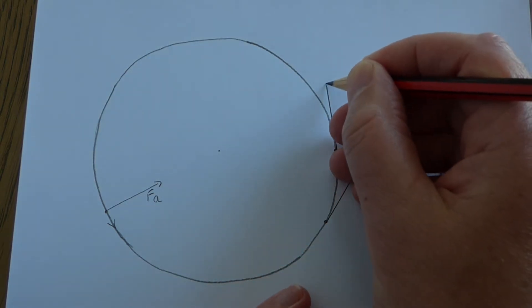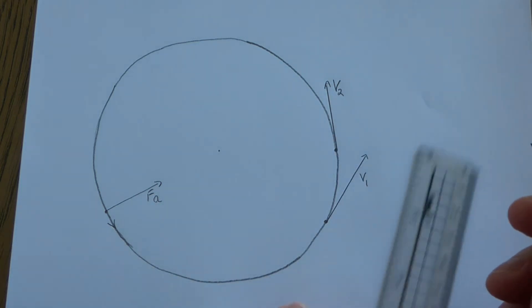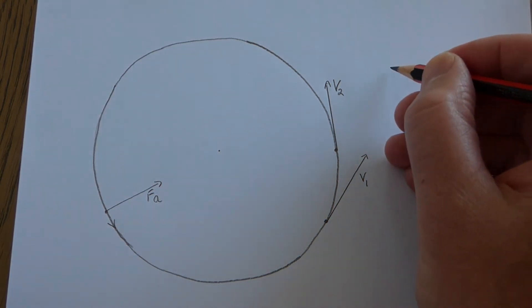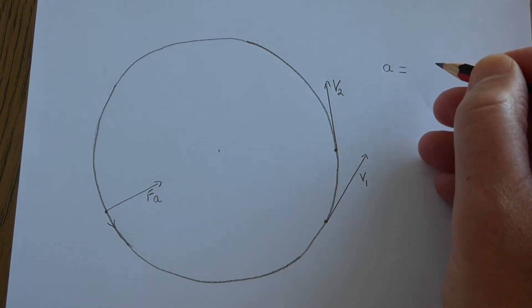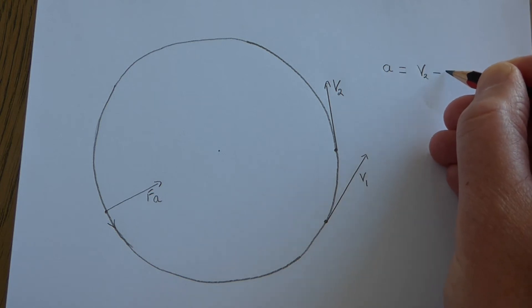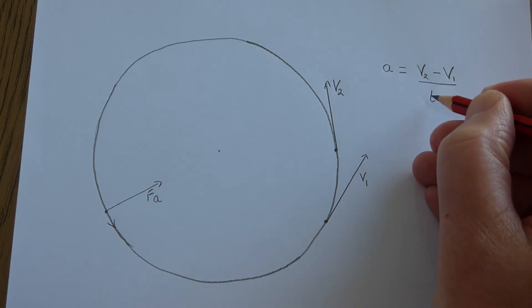The size is the same as before; we'll call that v2. Strictly speaking, if we want to work out the acceleration of the object, it's fairly straightforward. The definition of acceleration is the change in velocity divided by time, so it's v2 minus v1 divided by how long it takes.